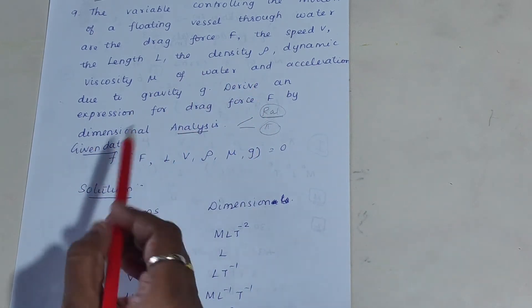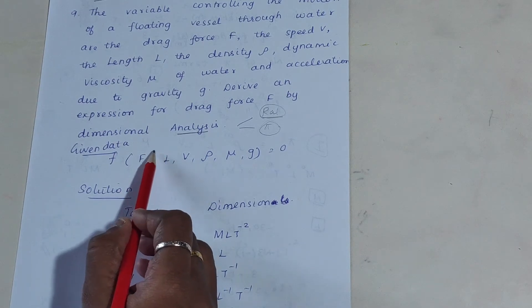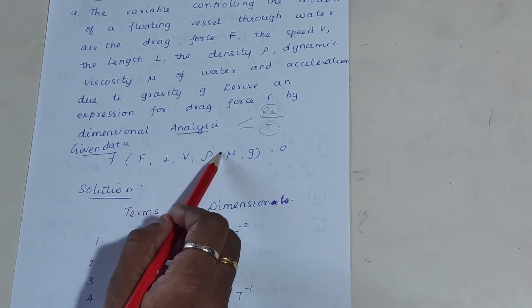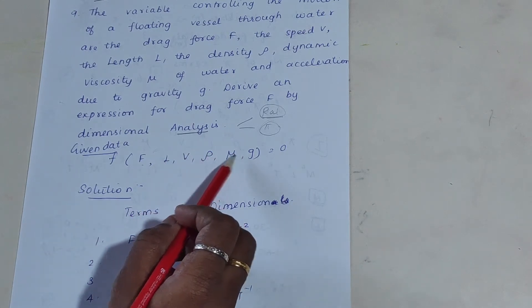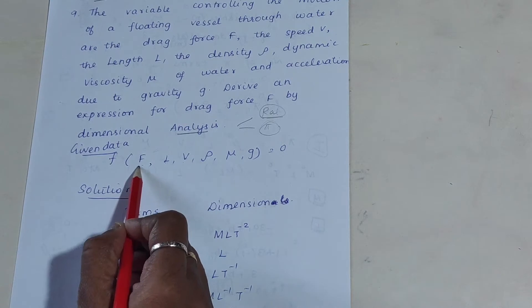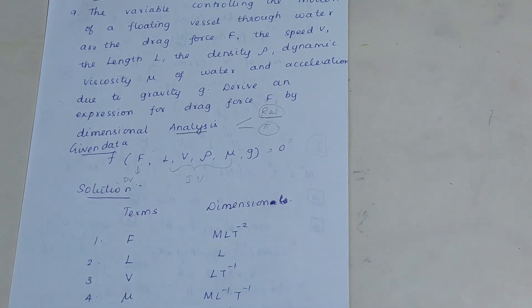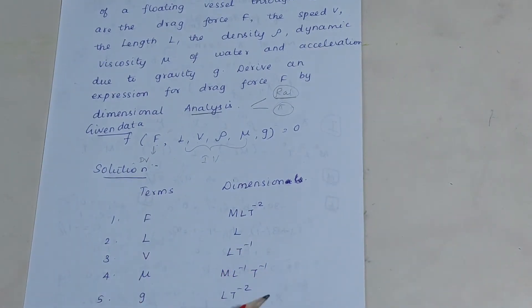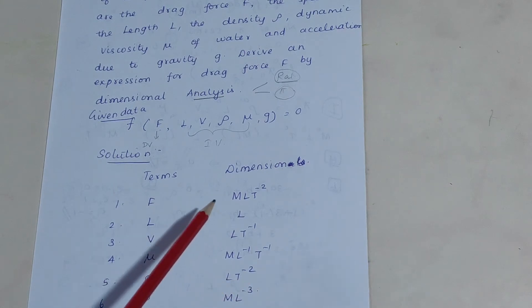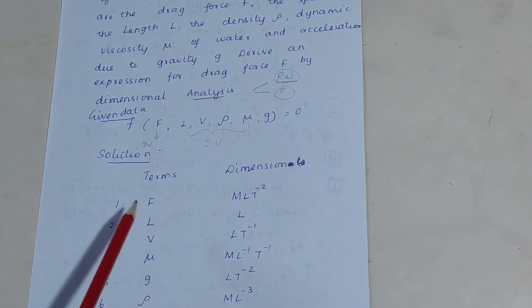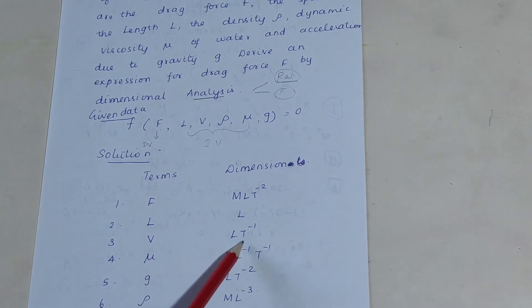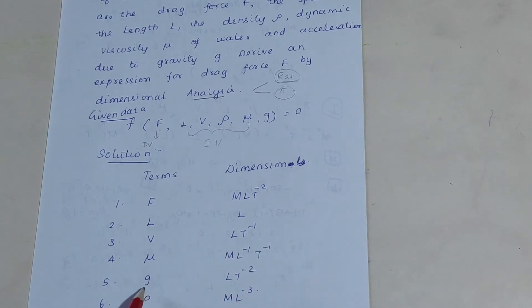Write down the given data: force F depends upon length, density, dynamic viscosity, acceleration due to gravity, and speed. F is the dependent variable; all others are independent variables. Now write down the dimensions for all variables: force is ML T⁻², length is L, speed is L T⁻¹, dynamic viscosity is M L⁻¹ T⁻¹, acceleration due to gravity is L T⁻², and density is M L⁻³.